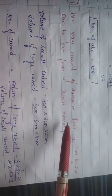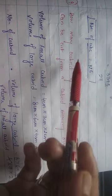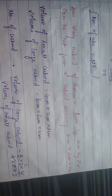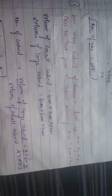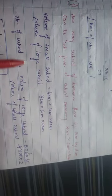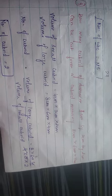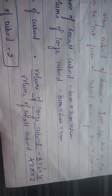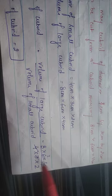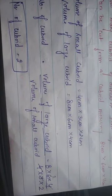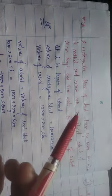So the number of small cubes obtained is 125. Next: how many cuboids of dimension 4 cm × 3 cm × 2 cm can be formed? Number of cuboids = volume of large cuboid ÷ volume of small cuboid = (8 × 6 × 4) ÷ (4 × 3 × 2) = 2.